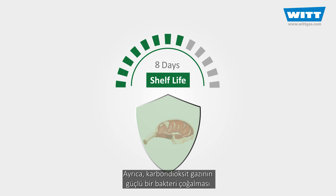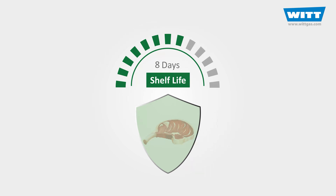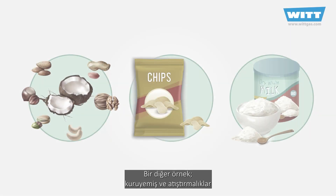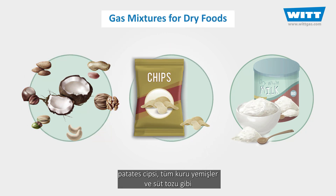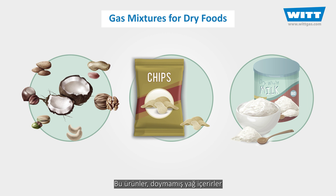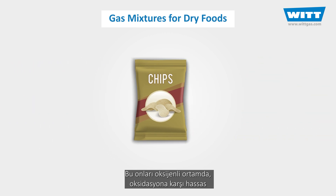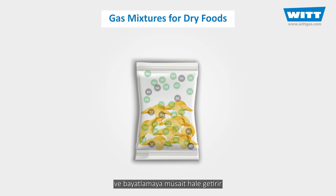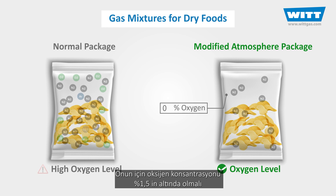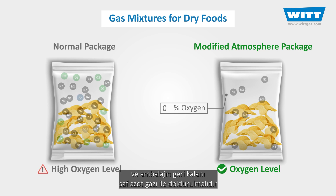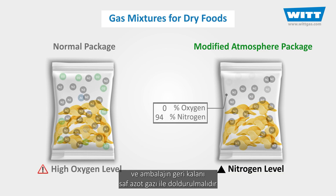Also, carbon dioxide has a strong inhibiting effect on the growth of bacteria, of which Pseudomonas presents the greatest problem for fresh meat. As another example, let's consider dry foods and snacks like peanuts, potato chips, and baby milk powder. These foods contain unsaturated fats that make them sensitive to oxidation and rancidity when oxygen is around. So the oxygen amount must be reduced to under 1.5 percent and the rest of the air inside of the package must be replaced with nitrogen.